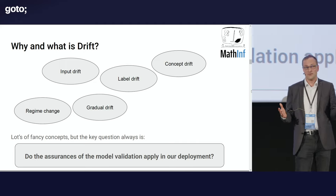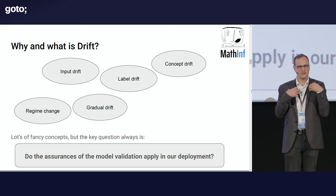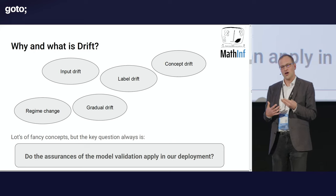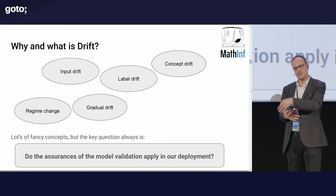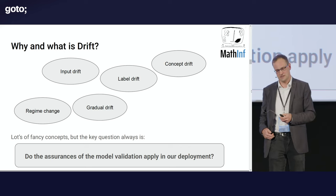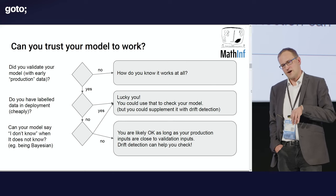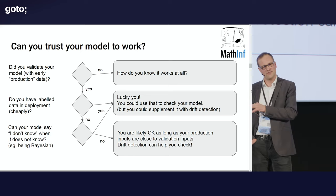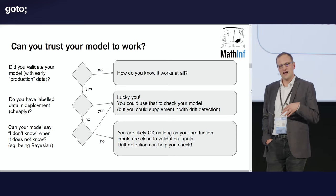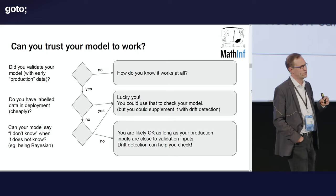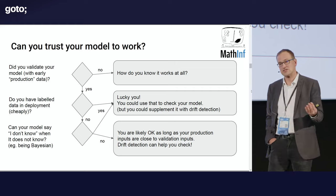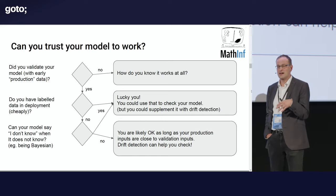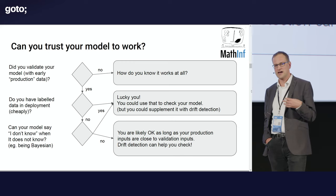As a practitioner, my question is: do the assurances of the model validation I did still apply in our deployment? If things have drifted, I'm saying no, because I'm seeing different data than I have tested the model on. If we can put this in a flowchart: can I trust my model to work? If I didn't validate my model, all bets are off anyway. So if I have labeled data cheaply — and if you Google drift detection you will find solutions that implicitly assume you have labeled data cheaply — then lucky you, you can do an ongoing validation using production data.